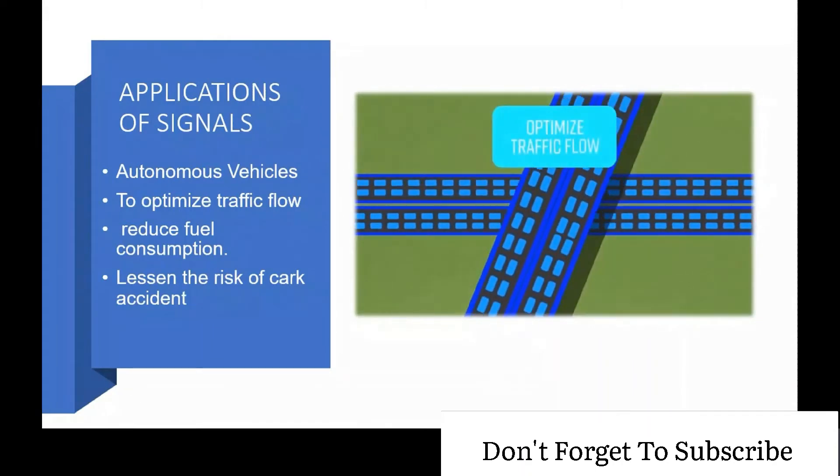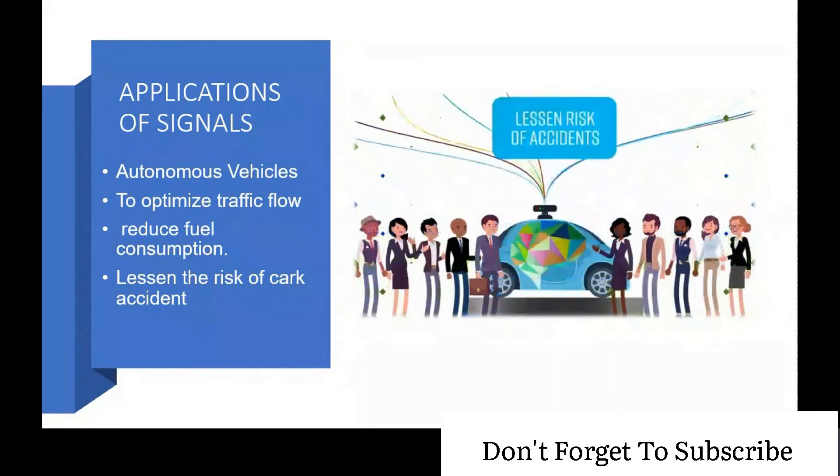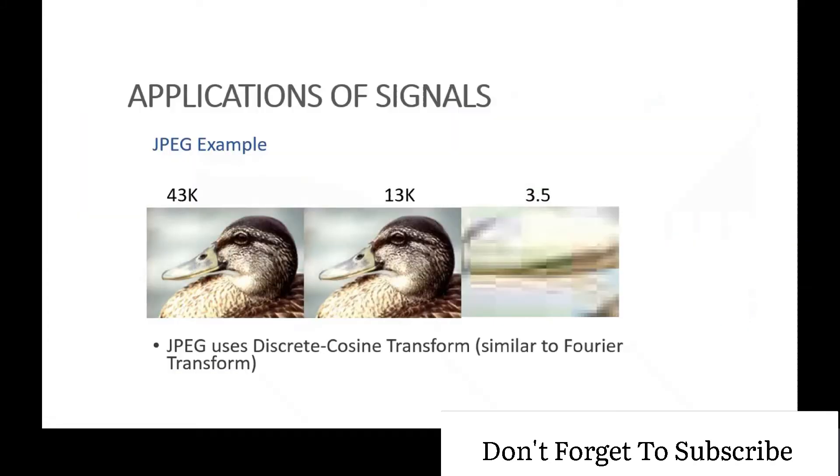To have smarter and better road conditions, it's even possible that vehicles could coordinate the distance between each other automatically to optimize traffic flow, reduce fuel consumption, and lessen the risk of accidents. This is just because of signals.